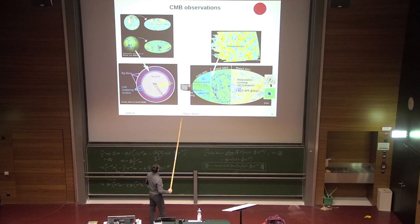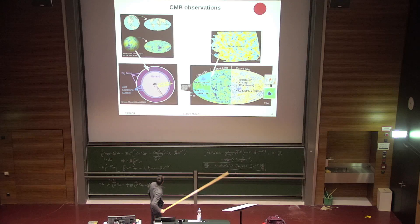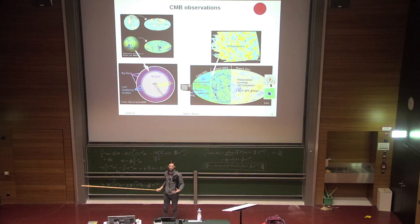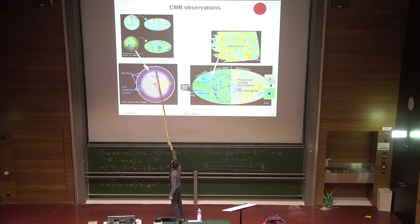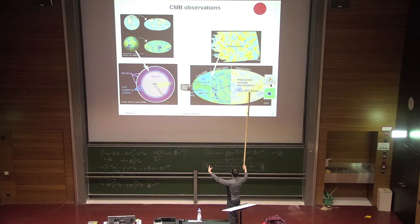Then we had COBE, which was a space mission — a satellite orbiting the Earth observing the entire sky. We observe the sky from inside, seeing it as a sphere — that's why it was called the celestial sphere. If we open it up like a map of the Earth, we get this elongated oval shape. This represents the temperature of the cosmic microwave background over the entire sky.